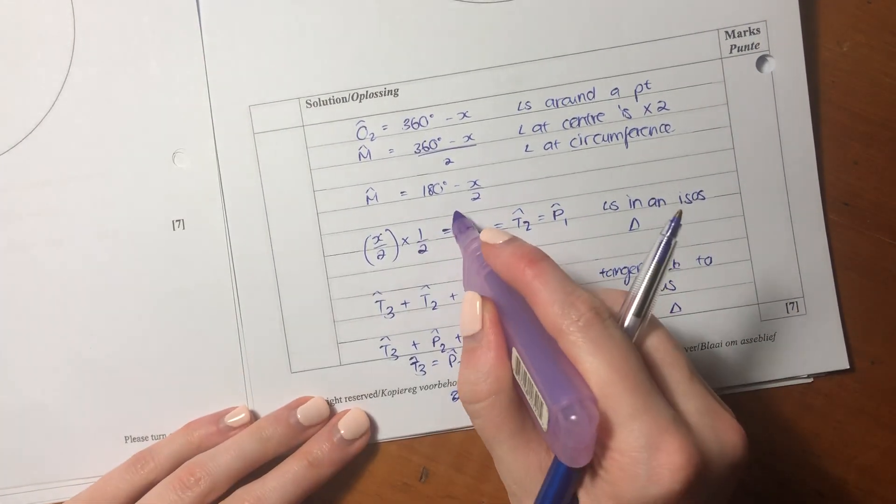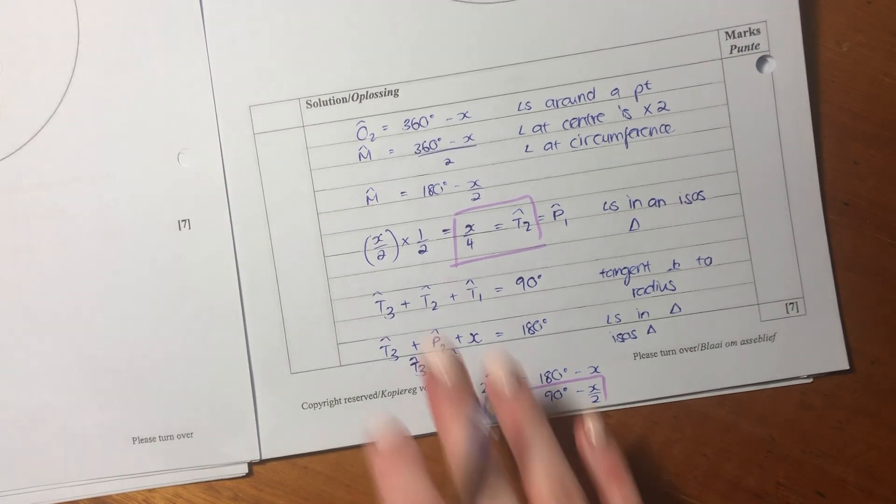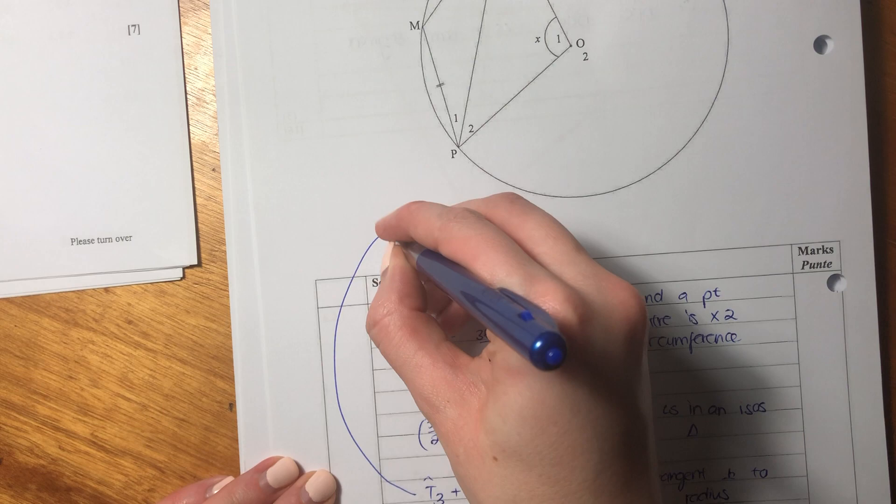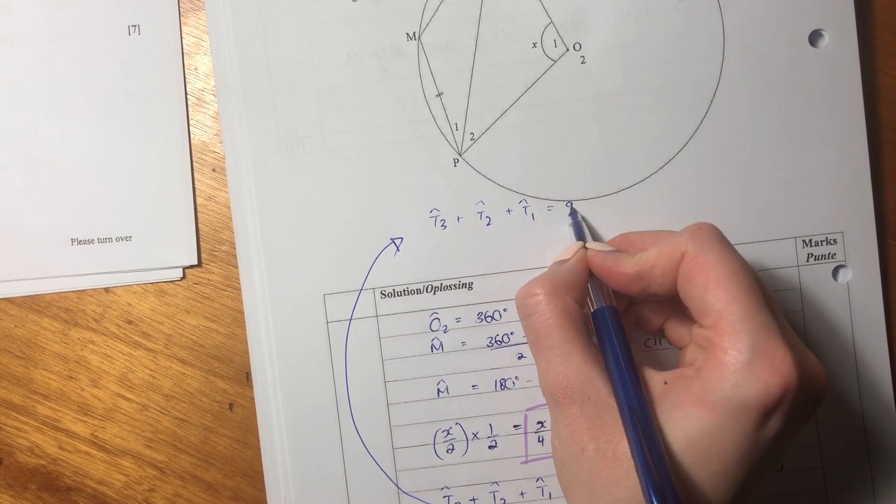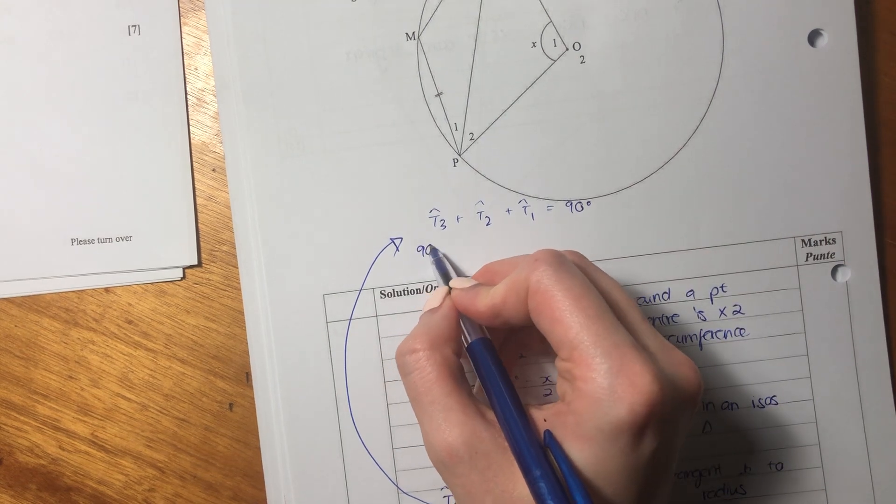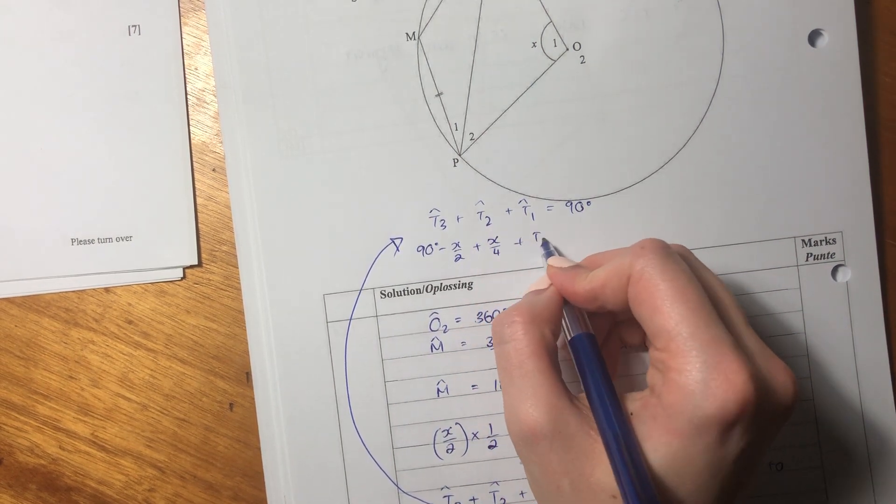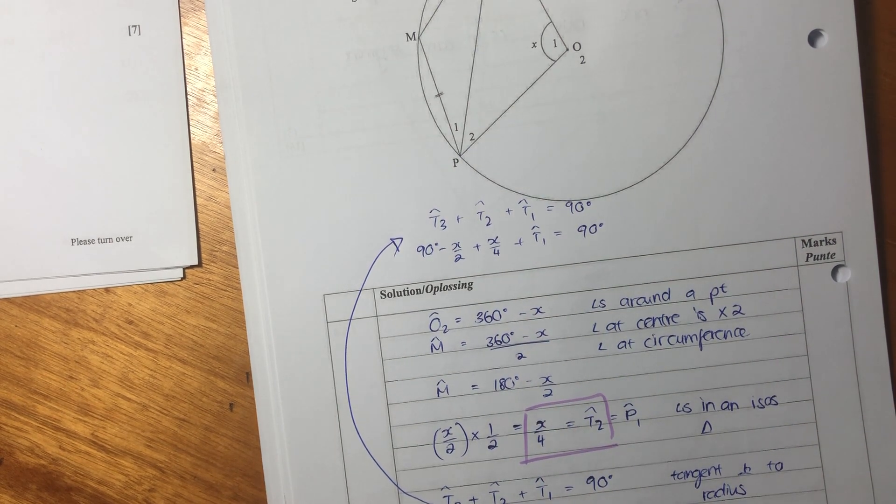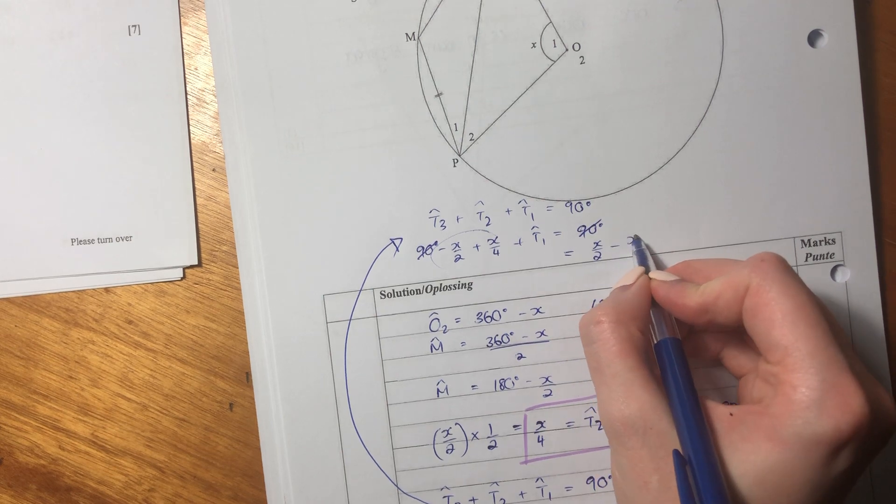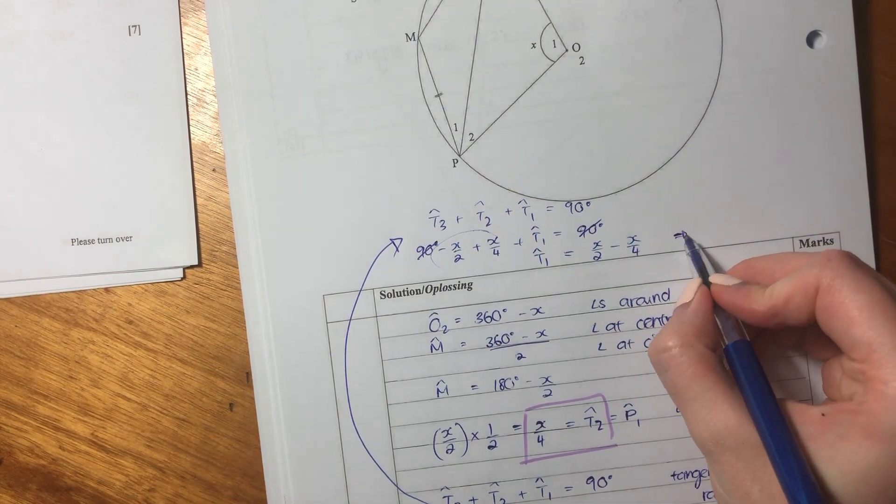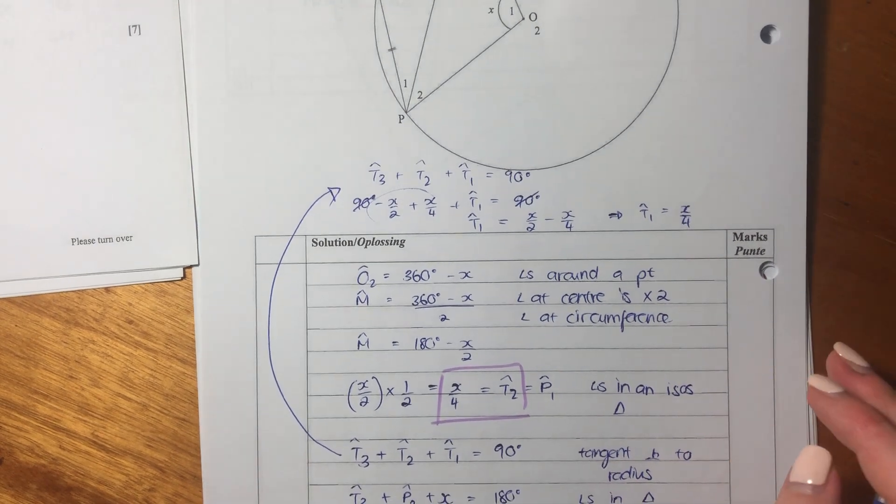So now we know what T2 equals. We have T2 equals this. We have T3 equals this. And we want to work out what T1 is. So I'm going to say T3 plus T2 plus T1 equals 90. So T3, we said, is 90 minus X over 2 plus X over 4, because that's what T2 equals, plus T1 equals 90 degrees. So now these two 90s cancel. I'm going to bring these two over this side. So it's become X over 2 minus X over 4 equals T1. Therefore, T1 equals X over 4. And we have proven what we need to.